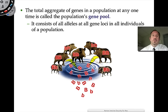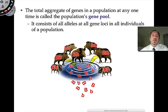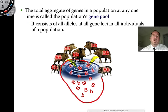All these boar have the same genes but may not have the same alleles. One boar might be little b, little b — another big B, big B — so one is homozygous recessive, one homozygous dominant, and another heterozygous. But if you took all of them and put them into the pool, you can think of this population as a collection of alleles instead of a collection of individuals.